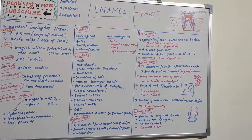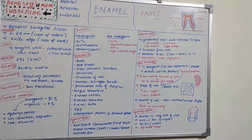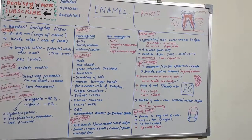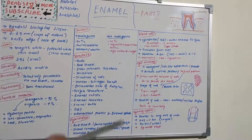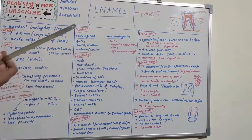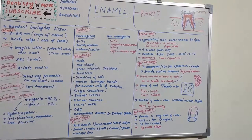The organic portion consists mainly of proteins: amelogenins and non-amelogenins. 90% of the total protein belongs to amelogenin, which is low molecular weight and rich in proline, histidine, glutamine, and leucine amino acids. Non-amelogenins make up only 10% and are high molecular weight proteins: ameloblastin, tuftelin, and enamelin, containing amino acids such as glycine, serine, and aspartic acid.